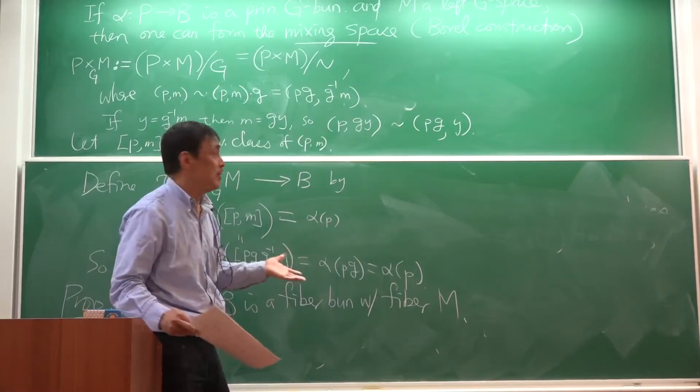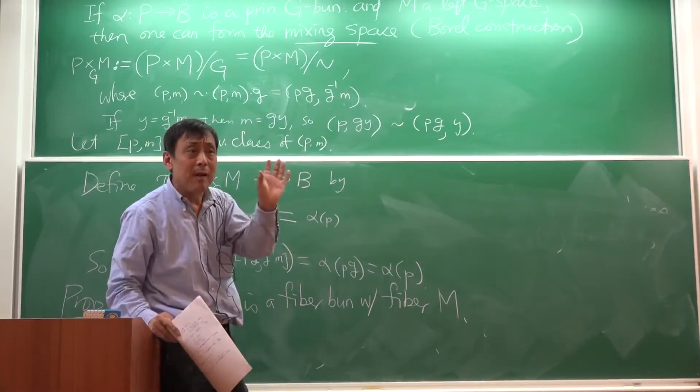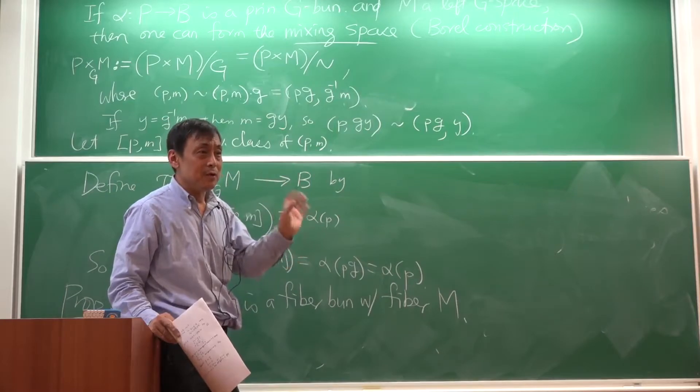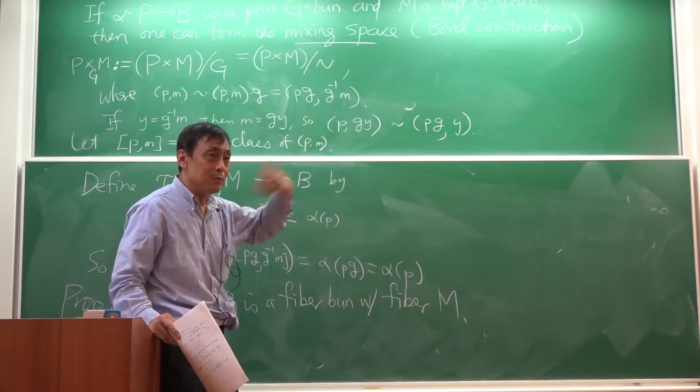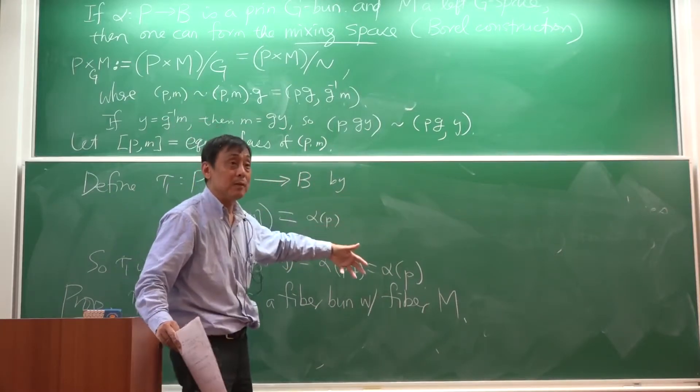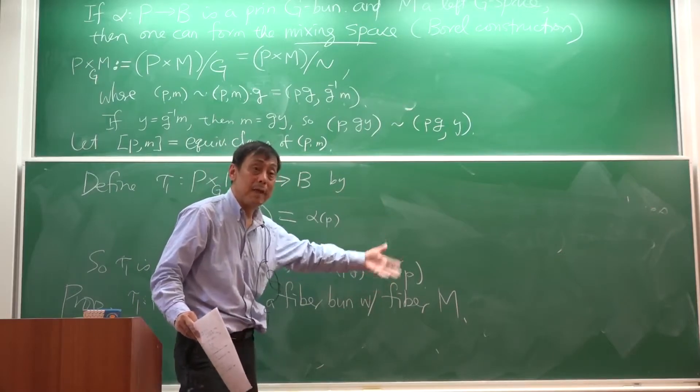And again, it's easy to check, because you can start with the product, you know, U cross G, and you do this mixing construction to it, you'll find that you get U cross M.